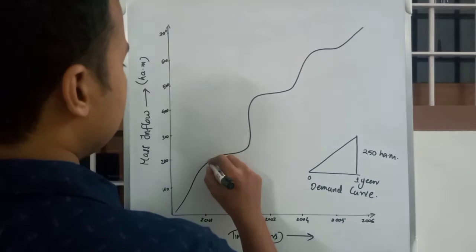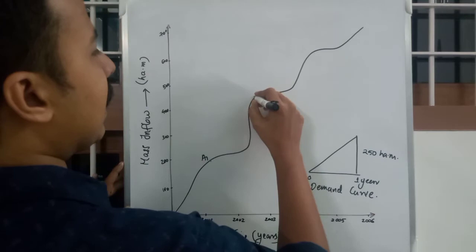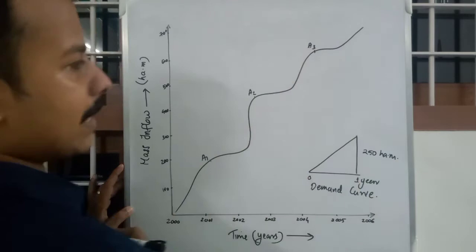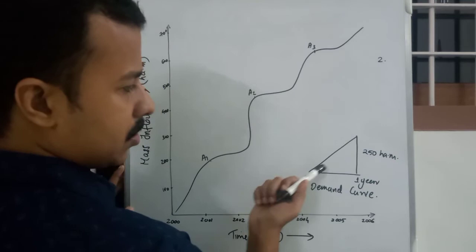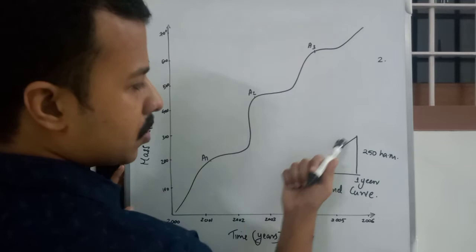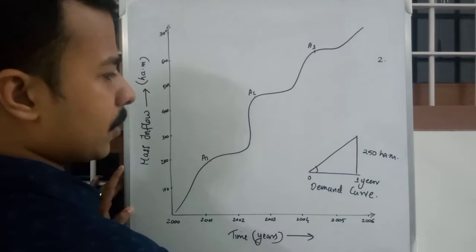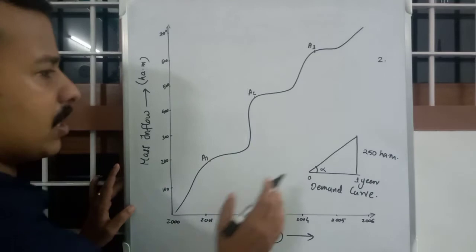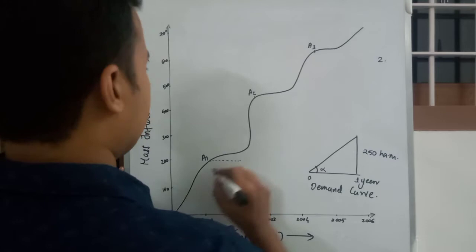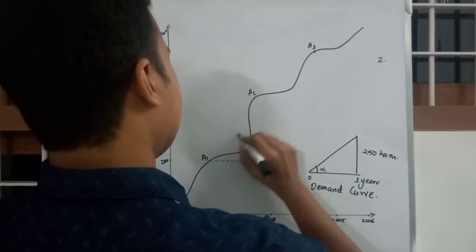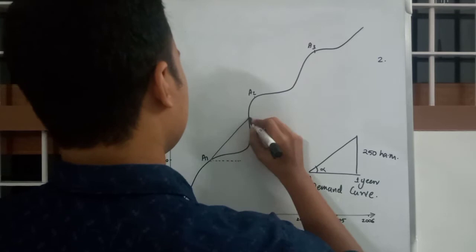The second step: see these high points — a1, a2, a3, etc. Draw a tangent parallel to the demand curve at all these high points. If the angle of the demand line with horizontal is alpha, you need to draw a line at angle alpha with the horizontal at each of these high points.